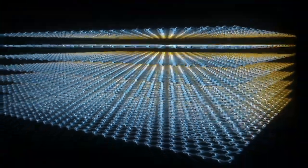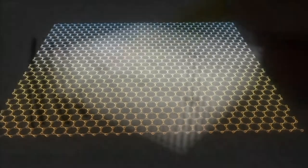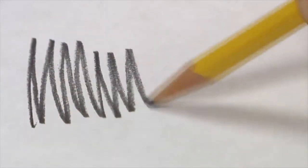The graphite allotrope exists as layers of flat carbon sheets, stacked one on top of the other. As a pencil moves across a sheet of paper, the sheets of graphite transfer from the pencil lead onto the sheet of paper.